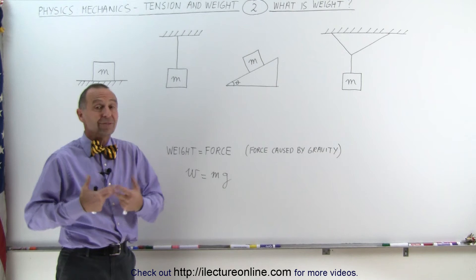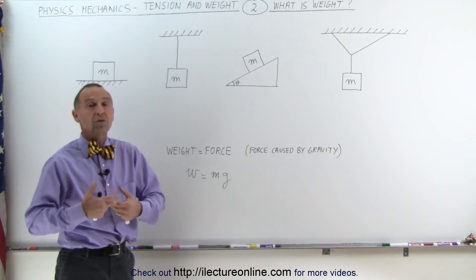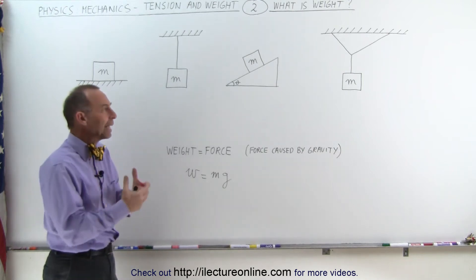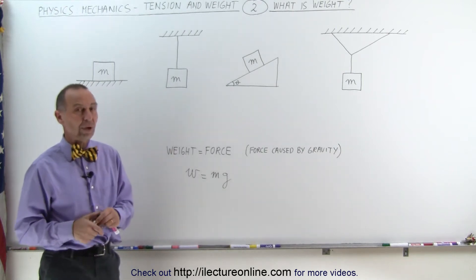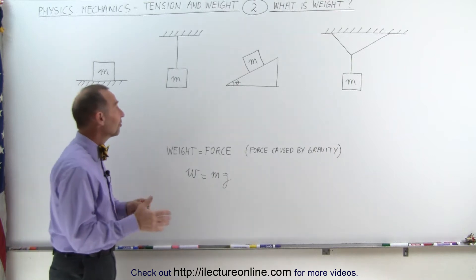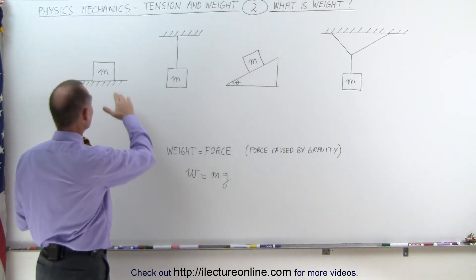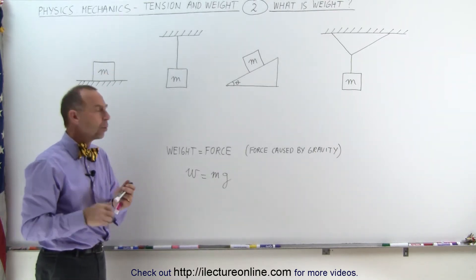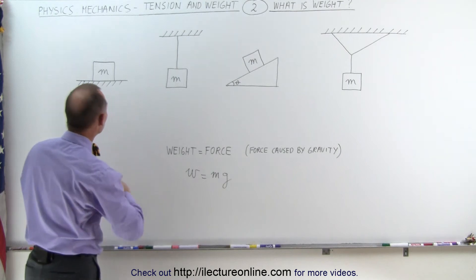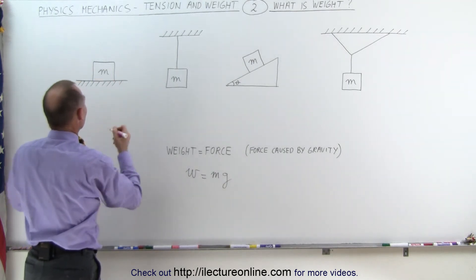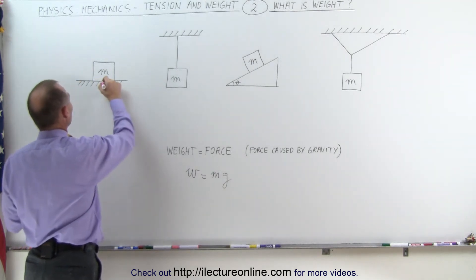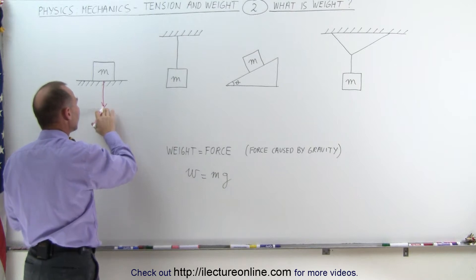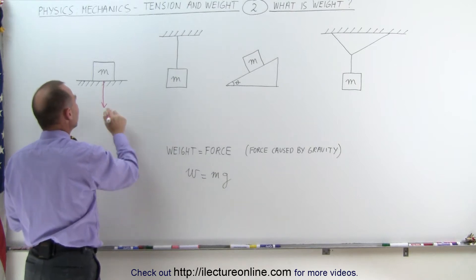What we need to know in physics is how to deal with weight — how does weight play a role in various types of situations? For example, if an object is sitting on the ground, what do we mean by weight? The weight is the force that pulls the object towards the ground. We can indicate that with an arrow representing the force of gravity.